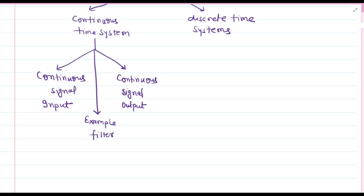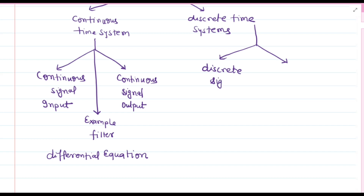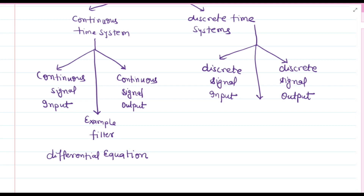Now let me introduce discrete time systems. As its name suggests, a discrete time system processes input signals that change only at discrete intervals of time. The output signal of discrete time systems also changes only at these intervals. Examples of discrete time systems include digital filters such as finite impulse response (FIR) filters and infinite impulse response (IIR) filters.